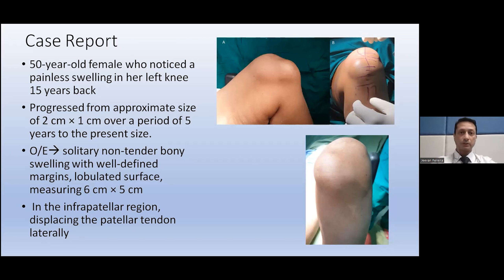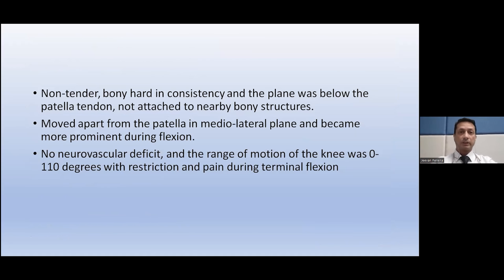On examination, it was a solitary swelling. It was not tender at all, and it was hard and well-defined — a bony swelling with well-defined margins and a lobulated surface measuring about six by five centimeters. It was mainly in the infrapatellar region and was displacing the patellar tendon laterally. It was non-tender and bony hard in consistency.